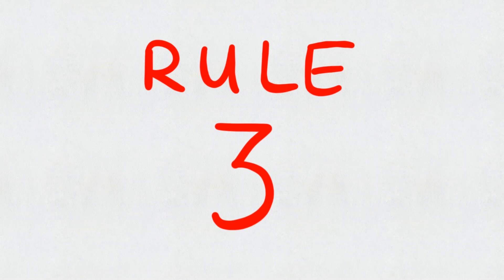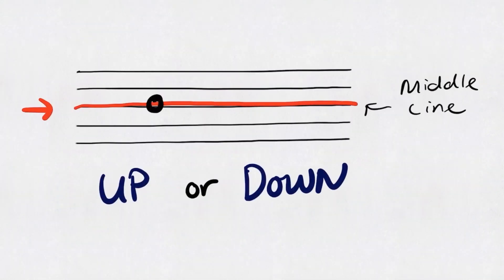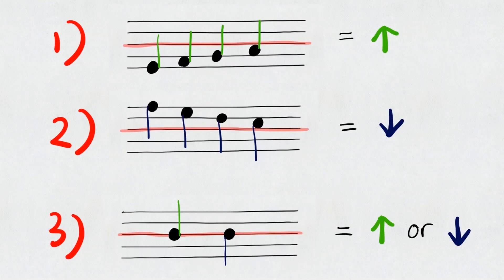Rule number three. Notes on the middle line may have their stem down or up. It's very simple. This rule applies for all notes, bass clef or treble clef.